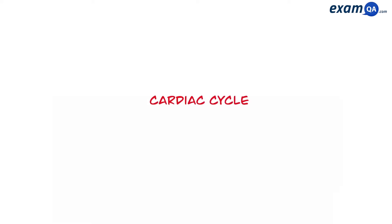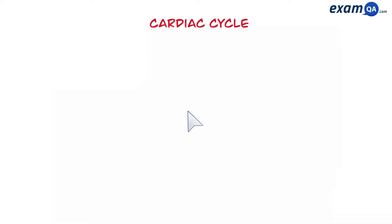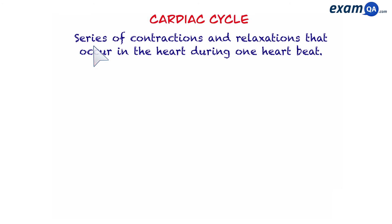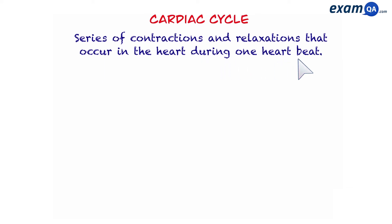In this video, we're going to be talking about the cardiac cycle. The cardiac cycle is a series of contractions and relaxations that occur in the heart during one heartbeat. In other words, the following events that we're going to talk about are happening in just a single heartbeat.